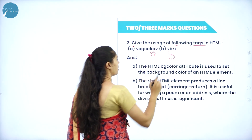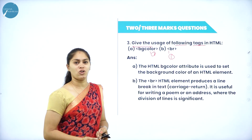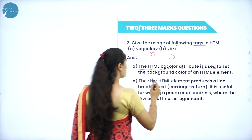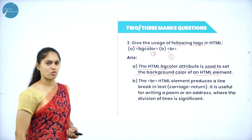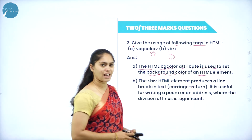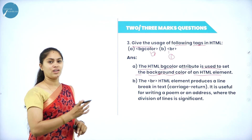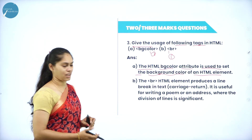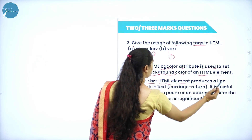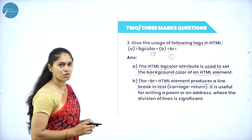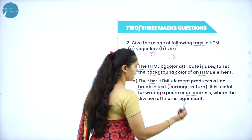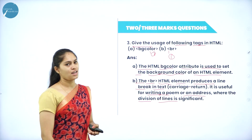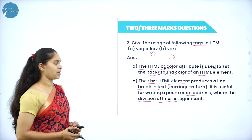Next question: give the usage of the following HTML tags - bgcolor and br. The bgcolor (background color) attribute is used to set the background color of an HTML document. It is an attribute of the body tag. The br tag indicates a line break - it produces a line break in text. We use the br tag when writing poems or addresses, whenever a division of lines is significant or mandatory.